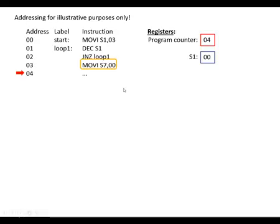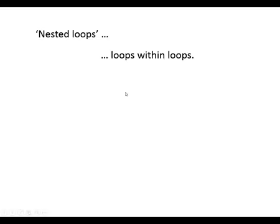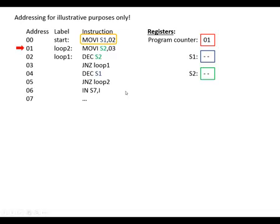We also have a nested loop — a loop within a loop — which allows us to do longer delays or more iterations. For example, if we put 100 in one register and 100 in another, it will carry out 100 times 100, or 10,000 loops.